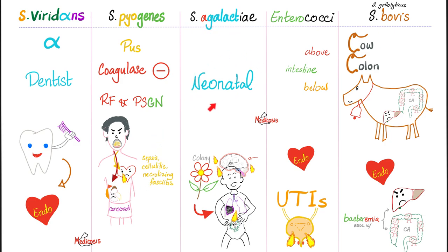Strep agalactiae causes neonatal sepsis, neonatal meningitis, and neonatal pneumonia. Can this affect adults? Absolutely. Group B strep or strep agalactiae can lead to urinary tract infections, endometritis, and bacteremia. Enterococci cause endocarditis and urinary tract infections. Streptococcus gallolyticus, formerly known as Streptococcus bovis — remember the cow and the colon — can be related to bacteremia, colon cancer, and liver disease, or any disease in the GI tract.